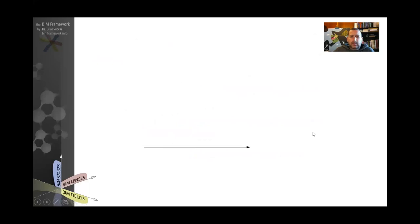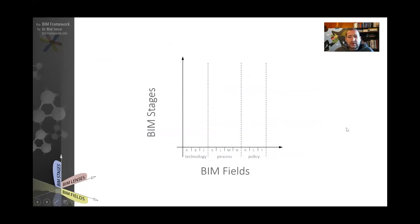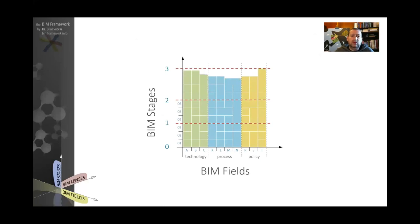Because set B, if you remember from previous slides, is the set that separates one from two. Finally, if we just give you a visual of all these steps, we have BIM fields here, we've got BIM stages there. If we subdivide these fields into technology, process, and policy, and we subdivide the stages into one, two, and three, you can imagine these steps as small blocks populating the distance between zero and one.